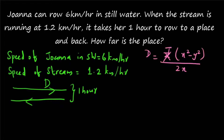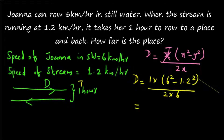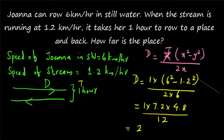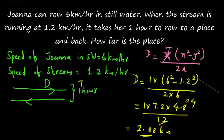Now let's apply this formula. Here t = 1 hour, so d = 1 × (6² - 1.2²) / (2 × 6). We apply the identity a² - b² = (a+b)(a-b), giving us (6 + 1.2)(6 - 1.2) = 7.2 × 4.8, divided by 12. This gives 7.2 × 0.4 = 2.88 kilometers. So the place is 2.88 kilometers away.